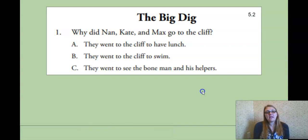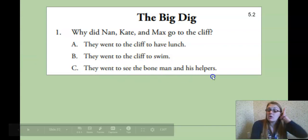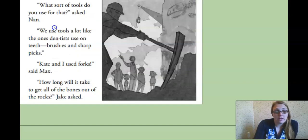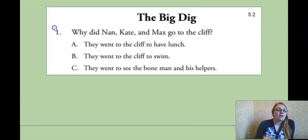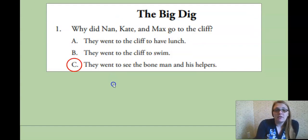Okay, so for the big dig, our first question that we're going to answer together. Why did Nan, Kate and Max, go to the cliff? They went to the cliff to have lunch. They went to the cliff to swim. They went to see the bone man and his helpers. Okay, so as always, read all of your choices. Look back in the story if you have to, to help you remember what happened. When we went back to the cliff, the bone man was there with some helpers, and that's when they saw what they were doing. There's nothing in here about swimming or about lunch. So they did not go to have lunch, they did not go to swim. They went to see the bone man and his helpers who were digging out the dinosaur.